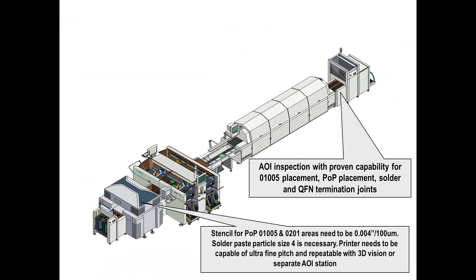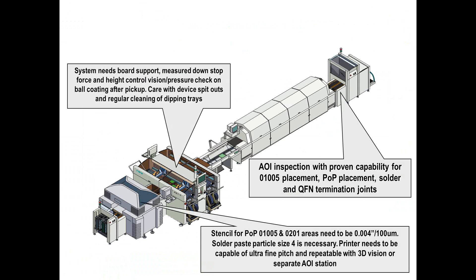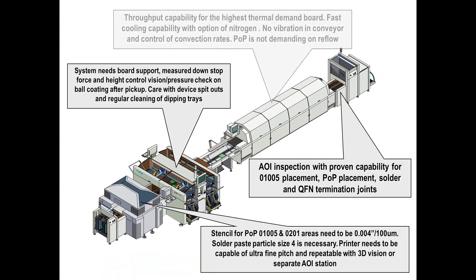In terms of stencil printing, when we're talking about small passives, we're now talking about the use of type 4 solder paste. The price is not significantly different from type 3, which has been standard for many years. We're talking about the move to a 4 thou or 100 micron stencil for these components, and ideally 3D inspection for solder paste, either based on AOI or a 3D system within your own printer. In terms of placement systems, the tape has gone down from 8mm to 4mm for small passive components.